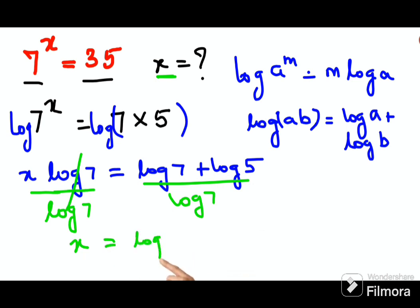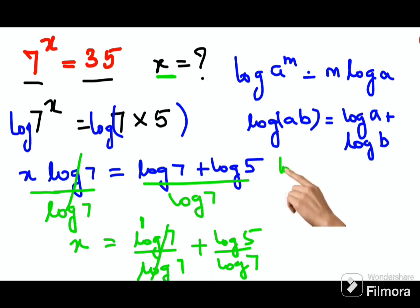Let's split this. So this will be log 7 upon log 7 plus log 5 upon log 7. Now this is cancelling and getting you 1, and always remember log of a upon log of b can...